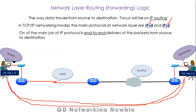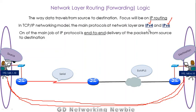The main job of these IP protocols is end-to-end delivery of packets from source to destination. From this source to this destination — this is known as end-to-end. This end-to-end delivery of packets is the responsibility of these protocols. In this video, we are going to focus on IPv4.